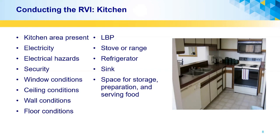The next area we'll be looking at is the kitchen. The first question on the HUD form or HUD-approved software would be: is the kitchen area present? All affordable housing units must have a kitchen area that is present. There is an electrical requirement for the number of outlets and light fixtures required, and we look for electrical hazards. We also look at security, window conditions, ceiling conditions, wall conditions, floor conditions, lead-based paint issues, stove and/or range, refrigerator, sink, and space for storage, preparation, and food service.